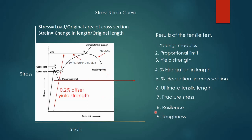There are two properties called resilience and toughness. Resilience is defined as the ability of the material to absorb elastic energy, and mathematically it is given as the area under the stress-strain curve up to the proportionality limit — that is, half times sigma times epsilon. Toughness is the ability of the material to undergo shocks, representing the total energy absorbed by the material — both the elastic part and the plastic part — given by the total area under the stress-strain curve up to the point of fracture. Thank you.